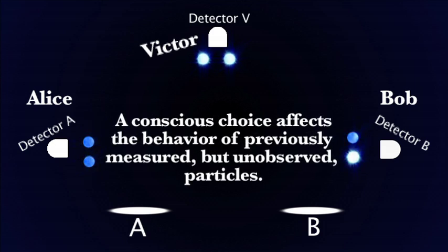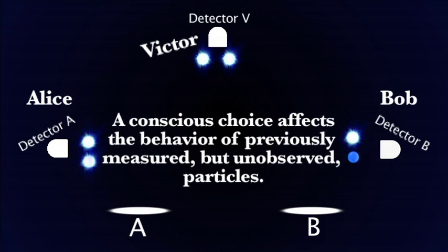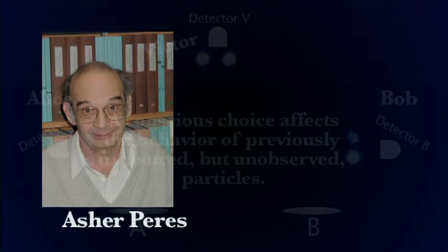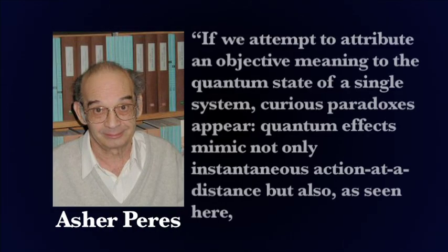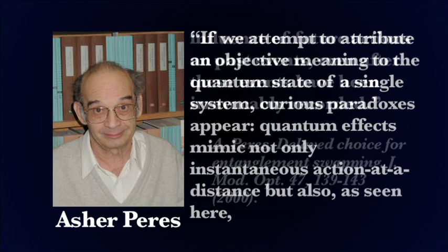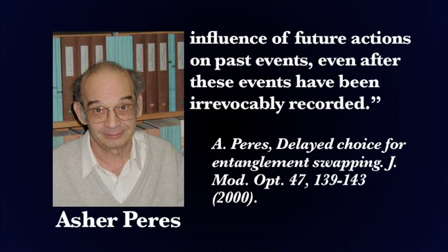Asher Perez, who developed the original thought experiment says, 'If we attempt to attribute an objective meaning to the quantum state of a single system, curious paradoxes appear. Quantum effects mimic not only instantaneous actions at a distance, but also, as seen here, influence of future actions on past events, even after these events have been irrevocably recorded.'